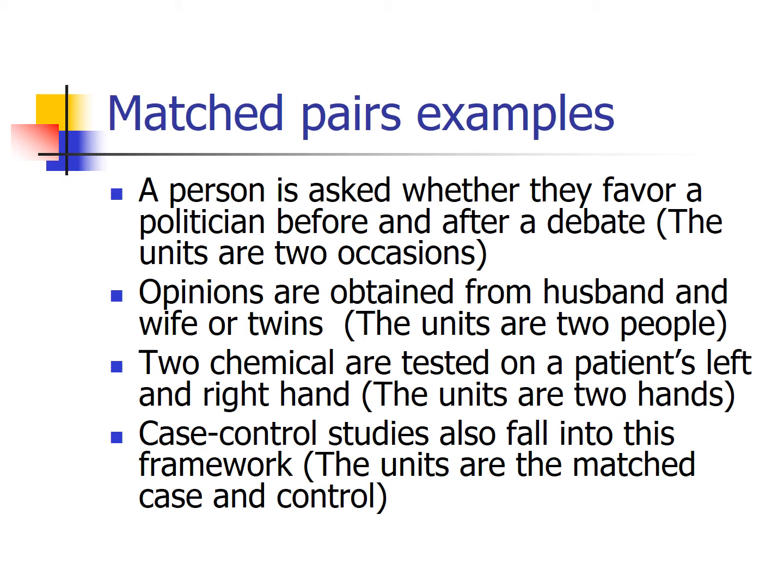Contrast this to a chi-square test where we generally measure two separate variables on the same individual. A McNemar's test is usually a pair of individuals, and on each pair we record the same piece of information. Other matched pair examples include: opinions from a husband and wife, or opinions from twins. We sometimes also do chemical tests on a left and right hand, left and right eye — pairing treatment and control on the same person to rule out confounding factors like different immune systems.